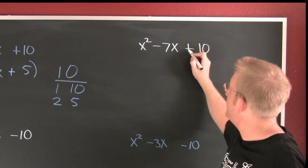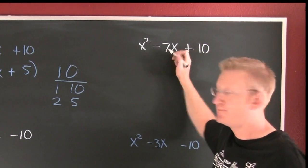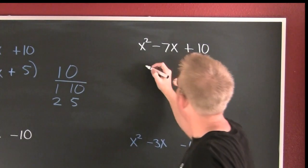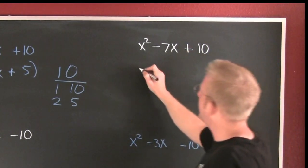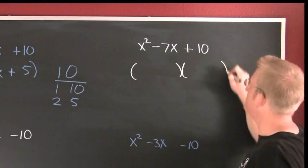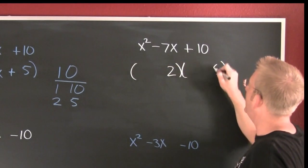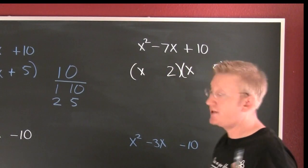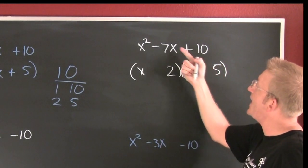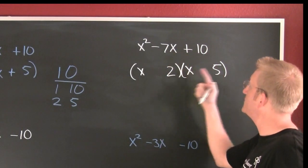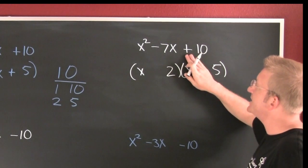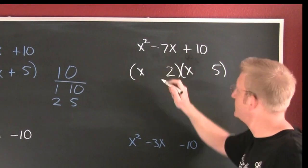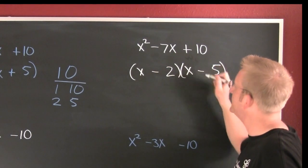I'm looking for the factors of 10 that add to be 7. I have 2 and 5. Here's how the story goes — we found 2 and 5, and the signs are the same and they're both negative.